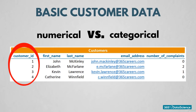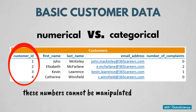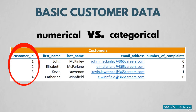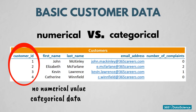Notice the first column. It shows the ID assigned to the different customers. These numbers, however, cannot be manipulated. Calculating an average ID is not something that would give you any sort of useful information. This means that even though they are numbers, they hold no numerical value and therefore represent categorical data.